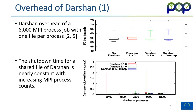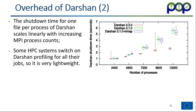The Darshan overhead is quite minimal. The top right box plot shows overhead for 6,000 MPI processes with one file per process — measuring in seconds, the overhead across various Darshan versions is very small. The chart at the bottom shows shutdown time for shared file execution, which is pretty much constant across versions. For one file per process, the Darshan shutdown time scales linearly, and again the units are in seconds. Some HPC systems switch on Darshan profiling for all their jobs — it's quite lightweight.